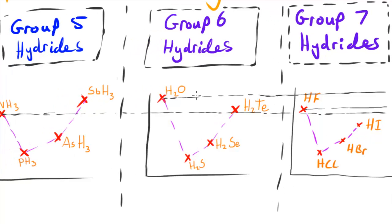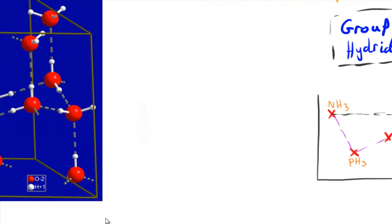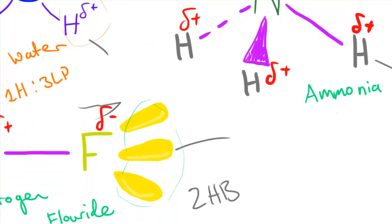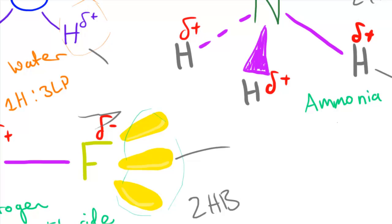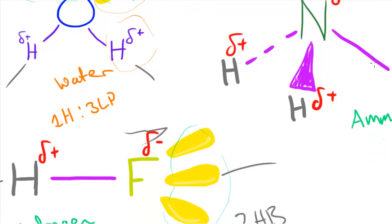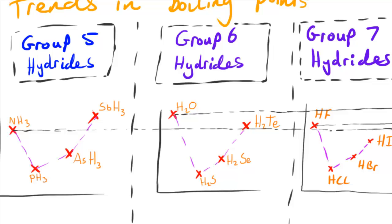This explains the trend H₂O > HF > NH₃. As for why HF has a higher boiling point than NH₃: fluorine is much more electronegative than nitrogen relative to hydrogen. Because of this greater polarization, the hydrogen bonds in NH₃ are slightly weaker than those in HF. So fluorine's higher electronegativity explains that remaining part of the trend. I hope you found this video helpful — see you in the next one!